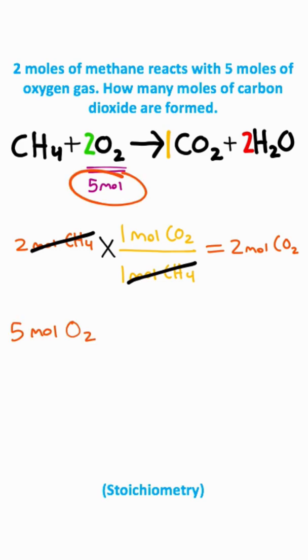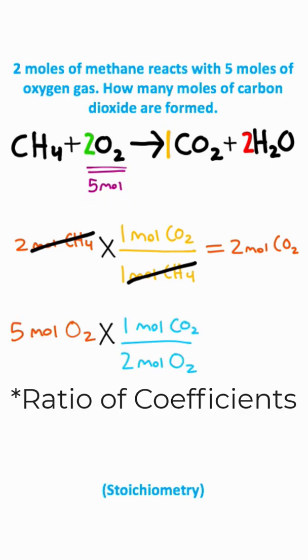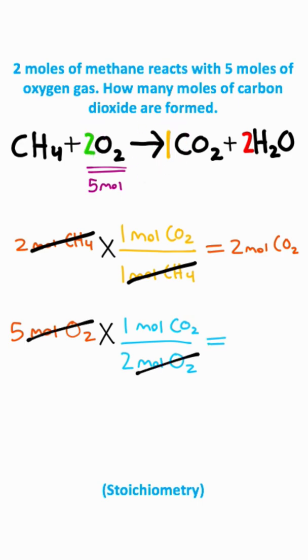Now let's go ahead and do this with the five moles of oxygen. I'm going to take five moles of oxygen gas and I'm going to multiply it by the coefficients. Notice we have a one coefficient here and a two coefficient here. We can cancel the moles of oxygen giving us five times one over two, which is 2.5 moles of CO2.